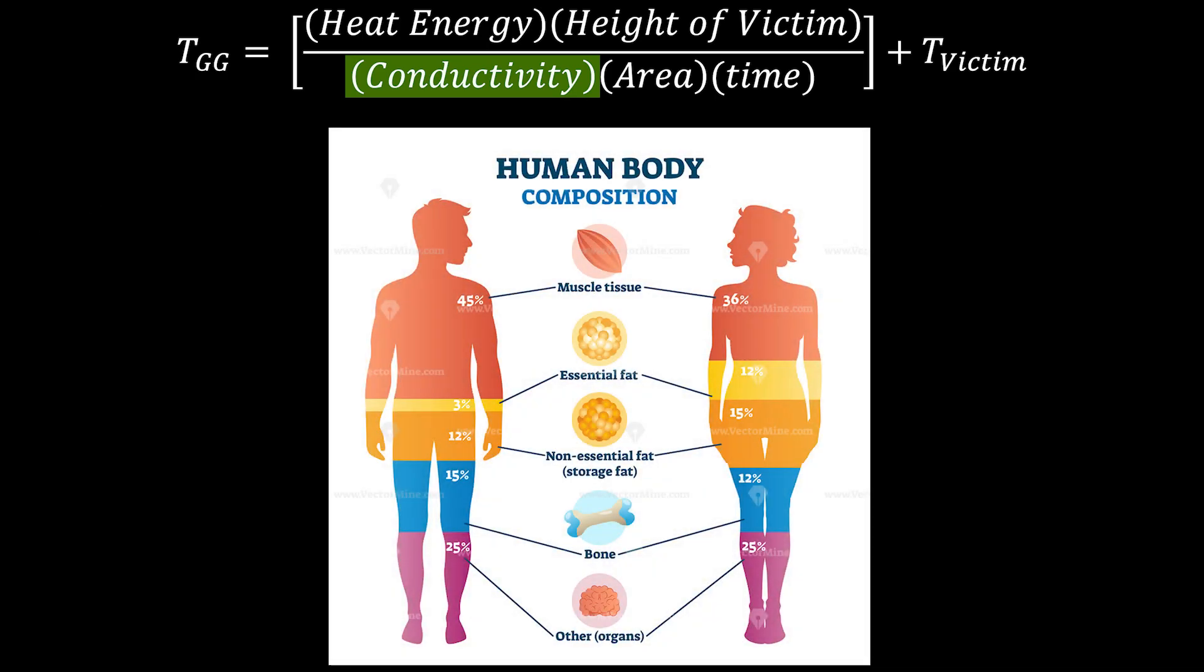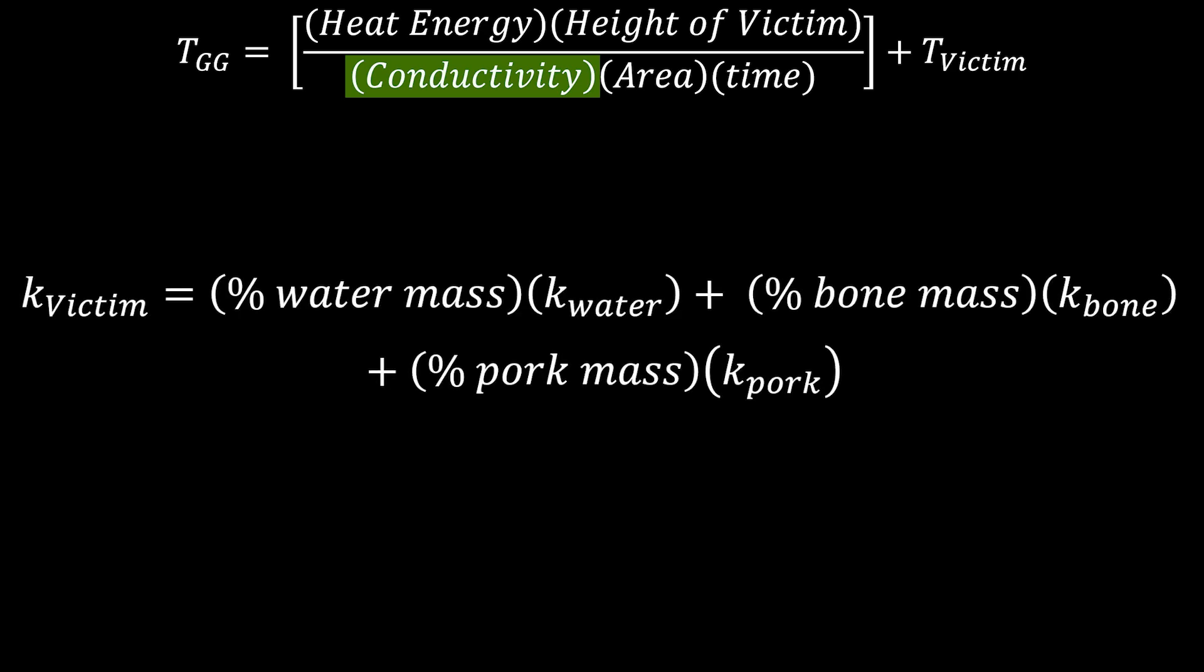But what about humans? Well, we aren't so easy. We are made up of a bunch of different types of materials. So, we need to find the conductivity of each of those, multiply by the percentage of our mass that they constitute, and then add those up. And all of that looks like this equation. So, we need to find all those percentages.